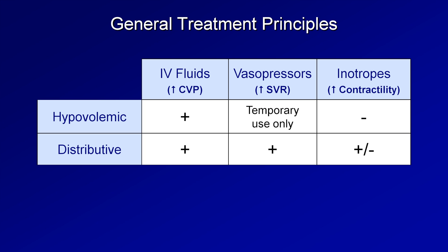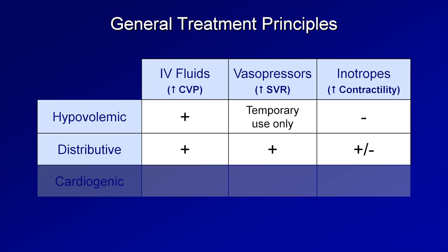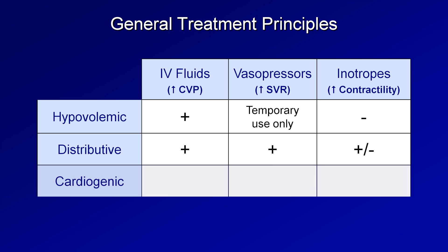That will be discussed more in the upcoming video on pressors. In cardiogenic shock, the primary problem is low cardiac output, thus inotropes are the main therapy. Both fluids and vasopressors are not only unnecessary, but contraindicated.